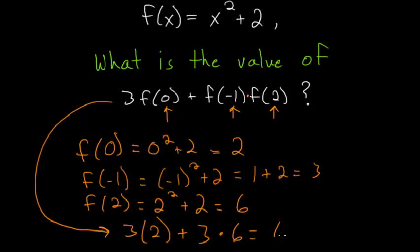So 3 times 2 is 6, plus 3 times 6 is 18. 6 plus 18 is 24.